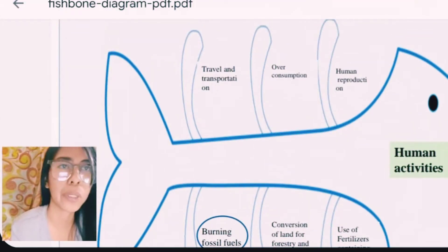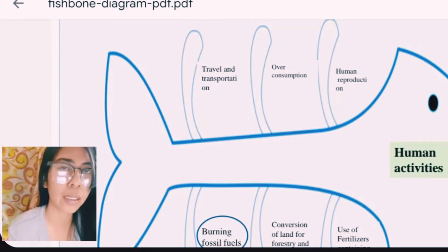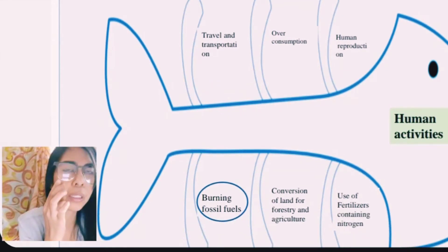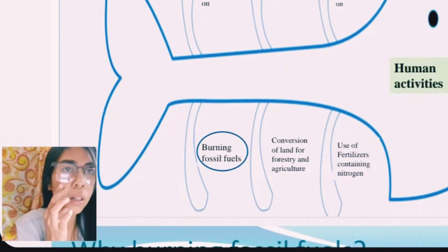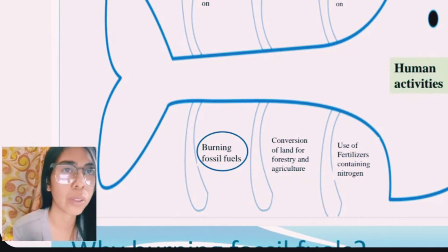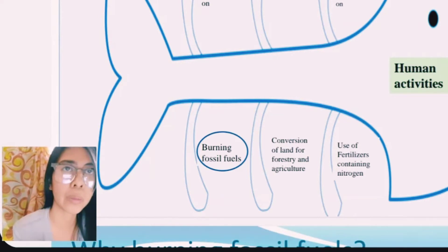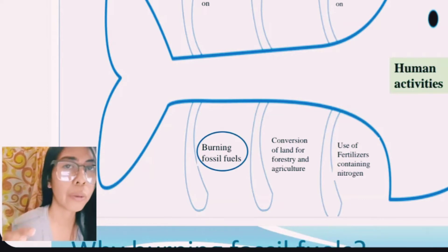Under human activities that contribute to climate change, we have: human reproduction, over-consumption, travel and transportation, use of fertilizers, continued nitrogen conversion, conversion of land for forestry and agriculture, and burning of fossil fuels. Burning fossil fuels is actually related to travel and transportation.